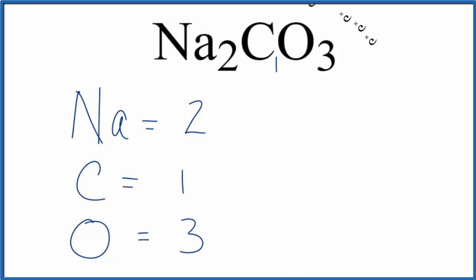So if we want to find the total number of atoms, we'll add these up. Three plus one is four plus two, six total atoms in Na2CO3.